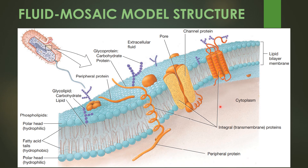The plasma membrane is present outside the cytoplasm. Going outward from the cytoplasm: plasma membrane, then outside the plasma membrane is the cell wall. This is the ultrastructure of the bacterial cell.